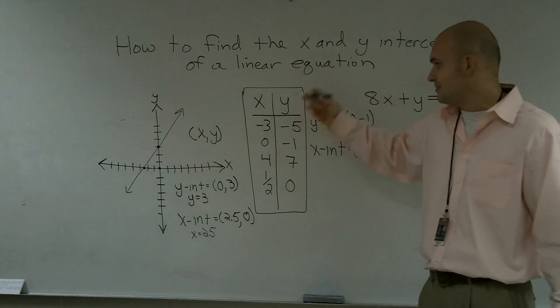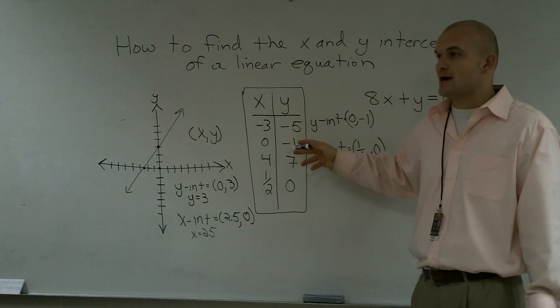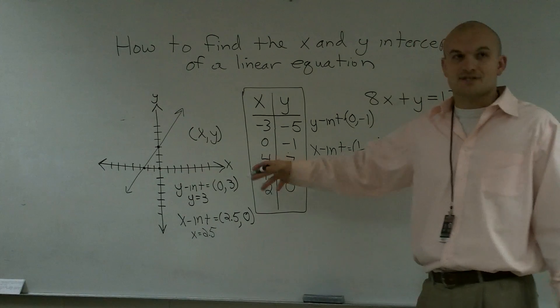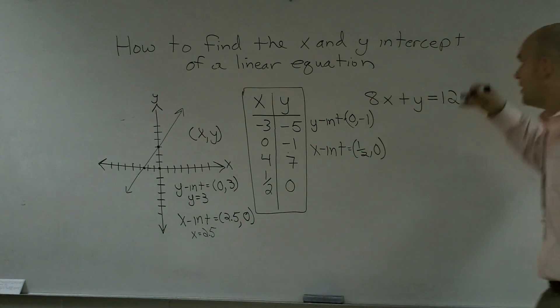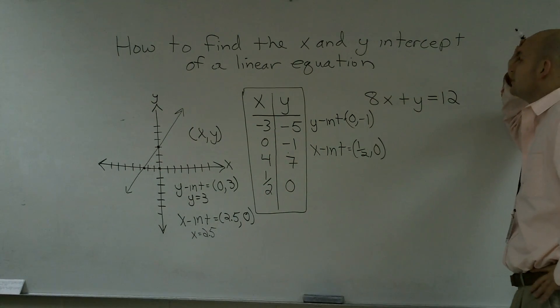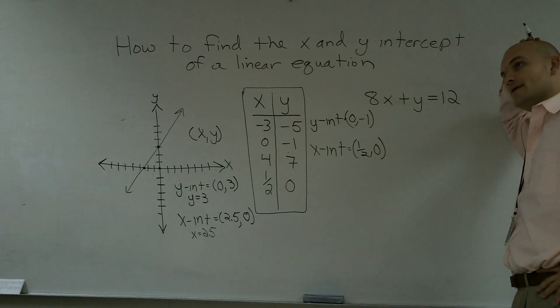The table is really easy because whenever x is 0, that means I know what the y-intercept is. Whenever y is 0, I know what the x-intercept is. That makes sense. But now, what am I going to do with this equation? And I'm going to look at it. I'm going to say, all right, well, we have an equation.